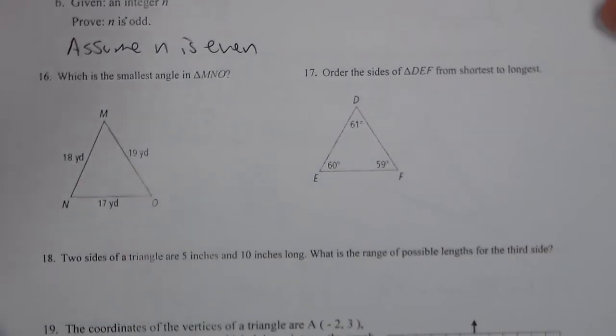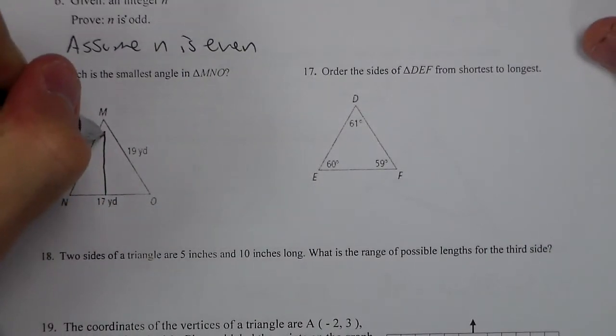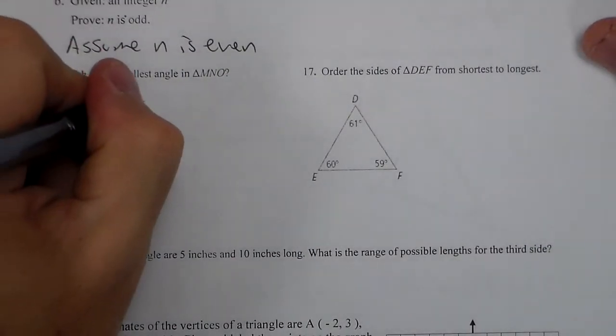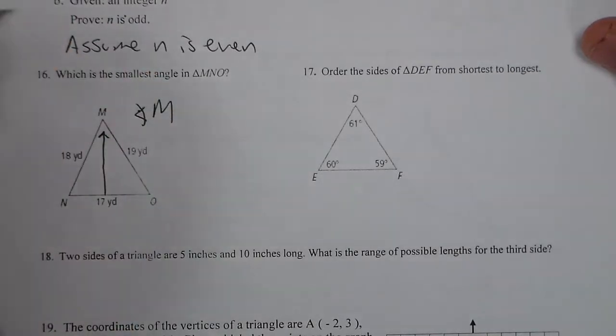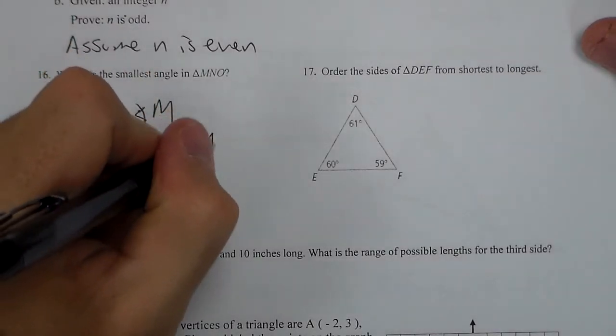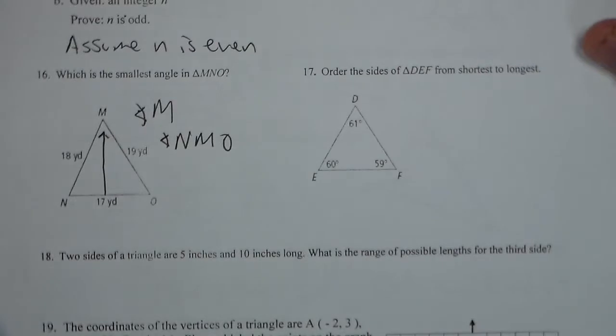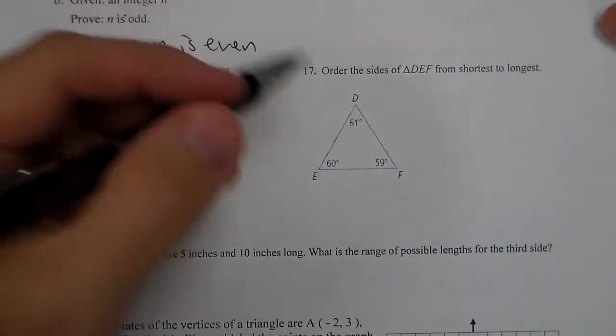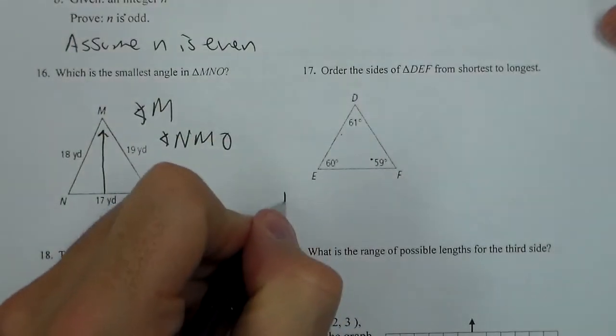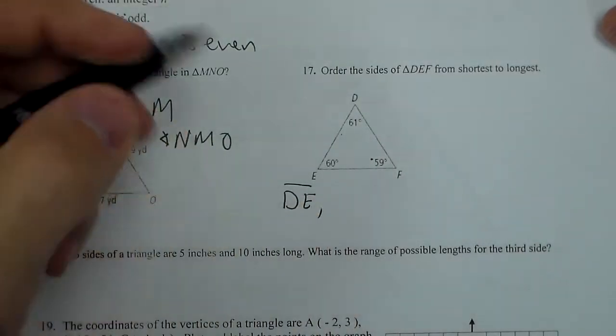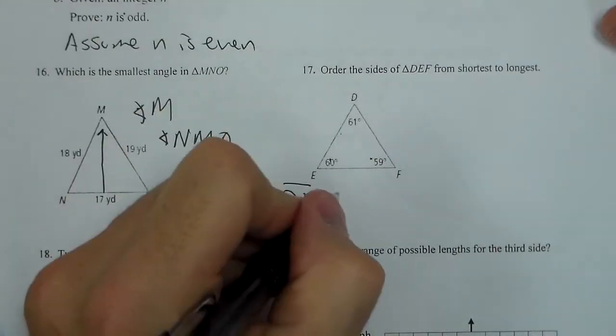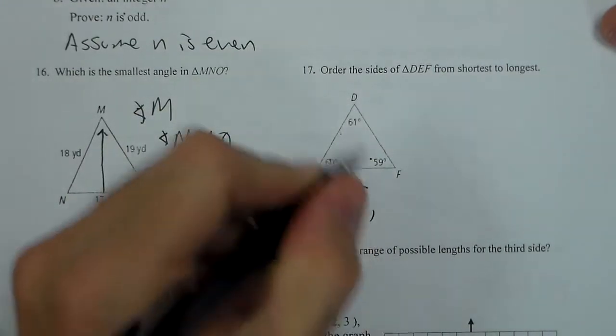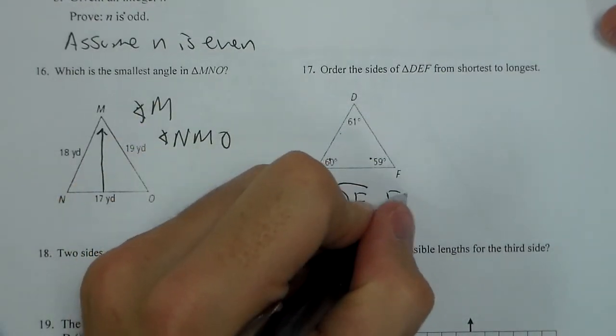16, which is the smallest angle? The smallest angle is opposite the smallest side. So we'd say angle M or angle NMO would be the same thing, just using three letters. For 17, the order of the sides from shortest to longest. Our shortest side is opposite the 59, so that's DE. Next is the 60, that's DF, it is opposite 2. And finally the 61, and we have EF.